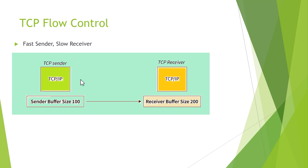Both the sender and the receiver maintain a buffer. When we speak about the buffer from the receiver side, it is called a window size. The window size is the amount of data that the sender can send in one go without getting an acknowledgement. The sender can wait as per the window size provided, which represents the available space in the receiver's buffer.